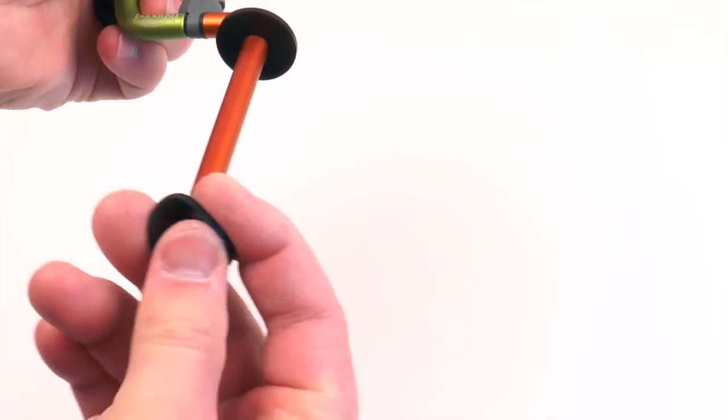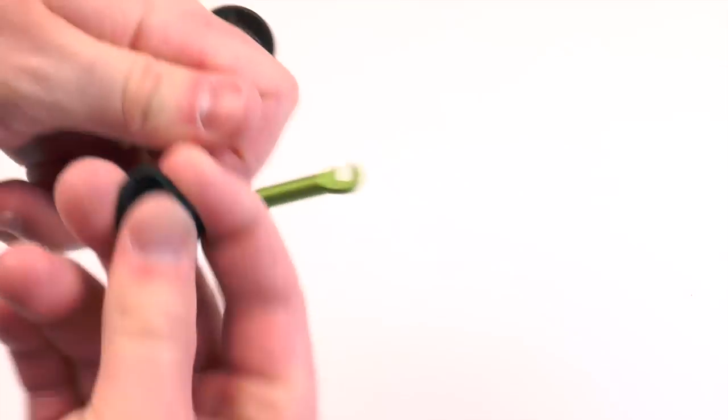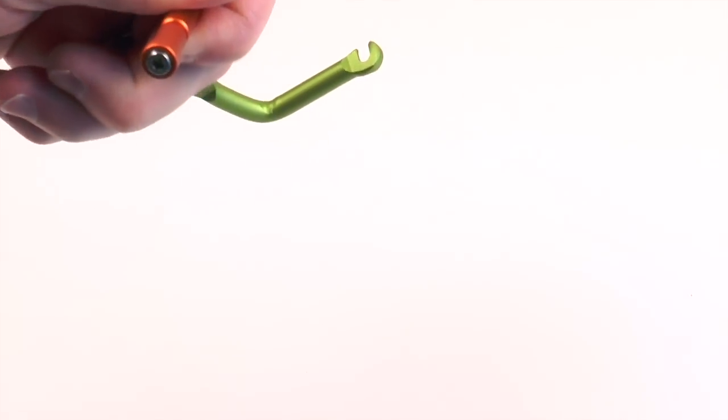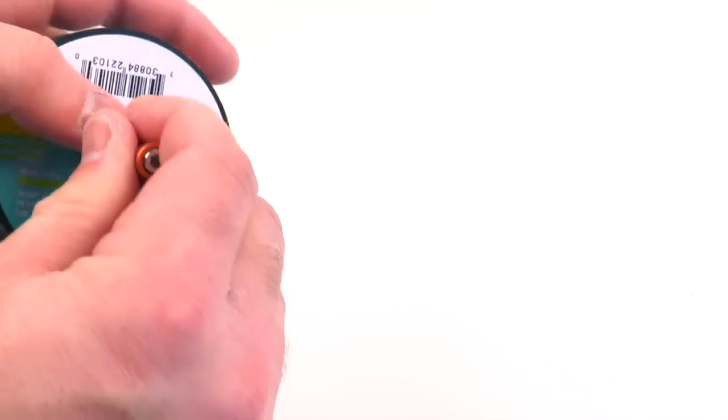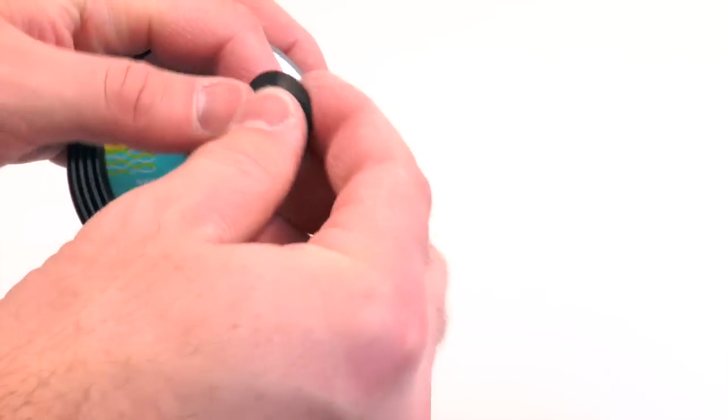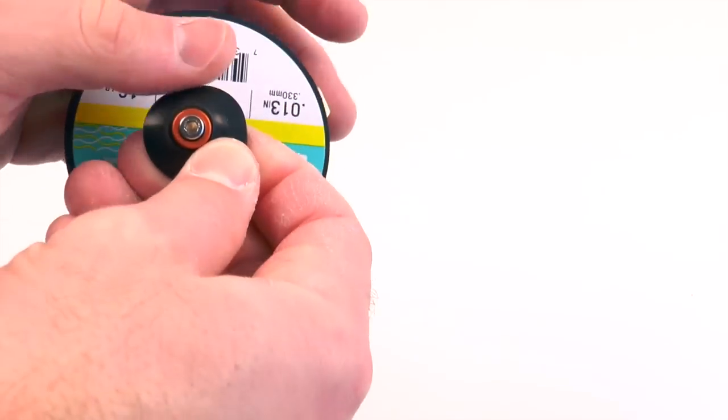And then you can take off your little rubber o-ring here. This helps keep your tippet from rattling around once you have it put onto your bar, keeps them from smacking together.